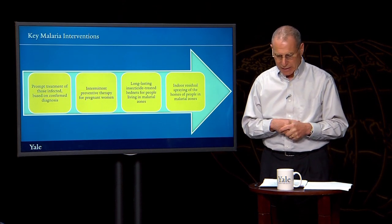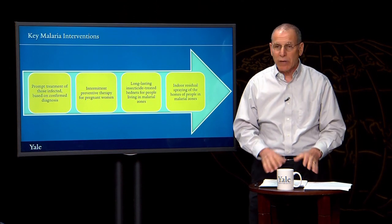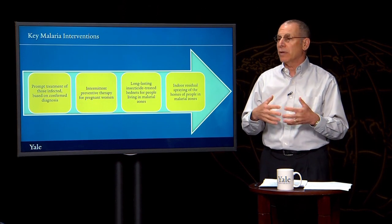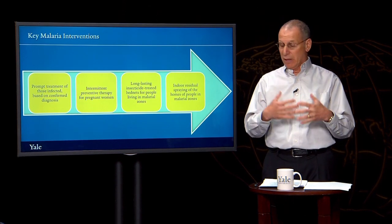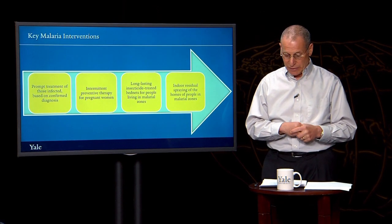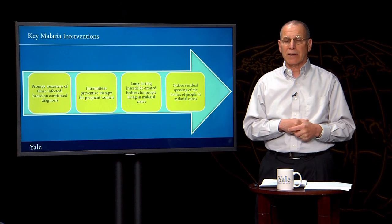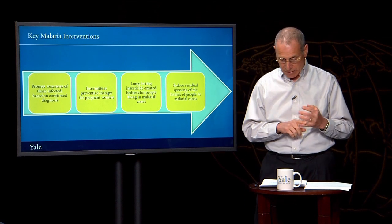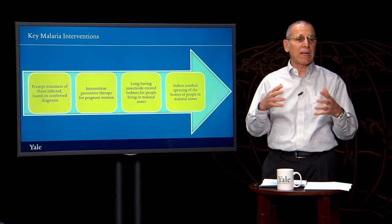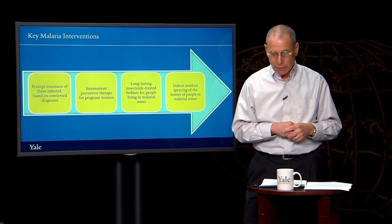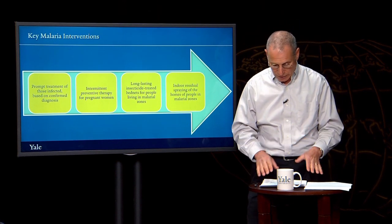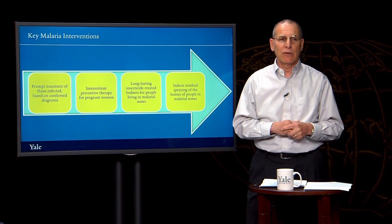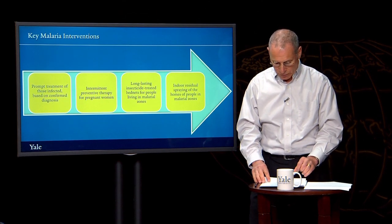Indoor residual spraying has also increased. Pyrethroids have been the insecticide of choice, and there's a lot of attention to trying to ensure that resistance doesn't develop to these insecticides. DDT is also approved for such efforts. The use of these insecticides will hopefully be carefully monitored with assessments made to examine resistance and efforts to rotate the insecticides in ways that will slow the development of resistance. Particular attention is also being paid to the environmental risks of these insecticides.